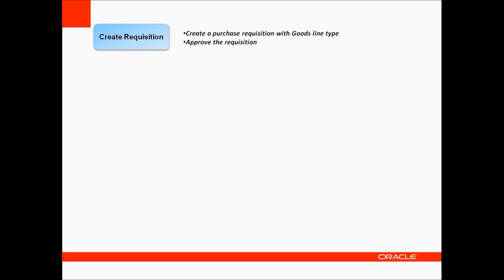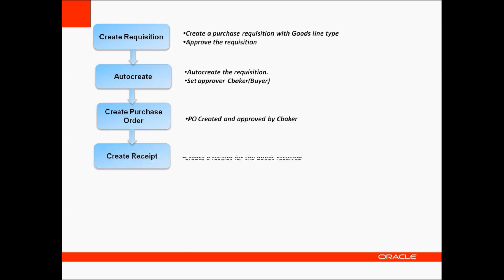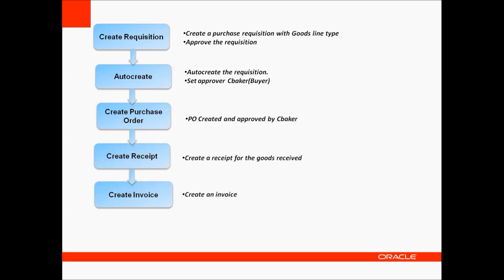The basic transactions are creating a requisition, auto-creating it to a purchase order, creating a purchase order, approving it, creating a receipt, creating an invoice, and making payment for the invoice.